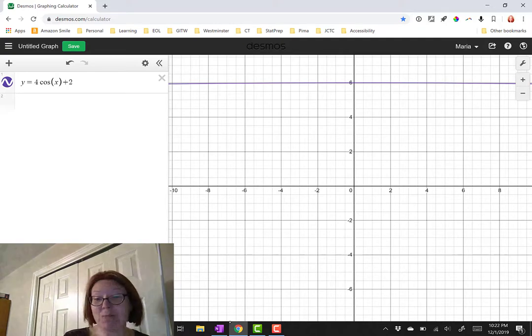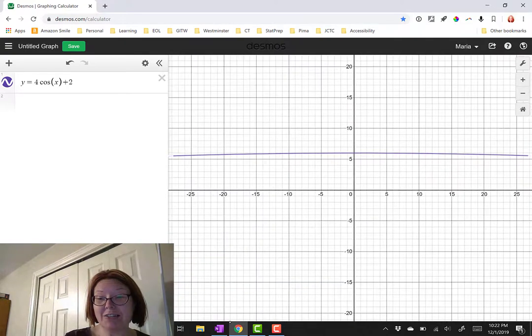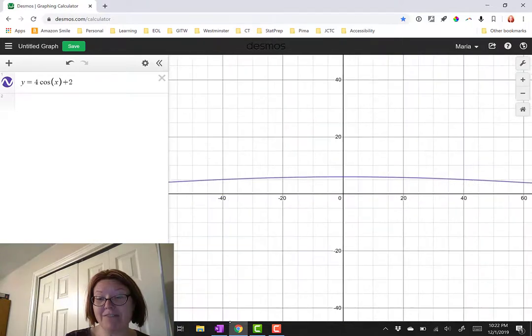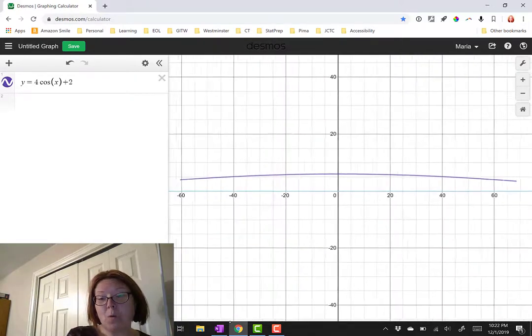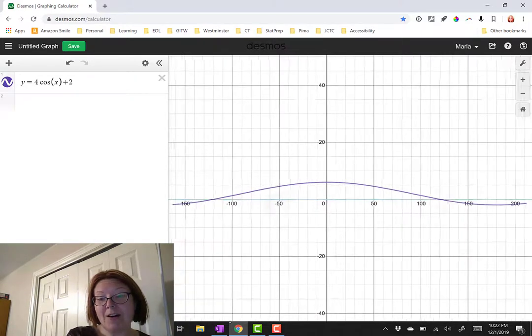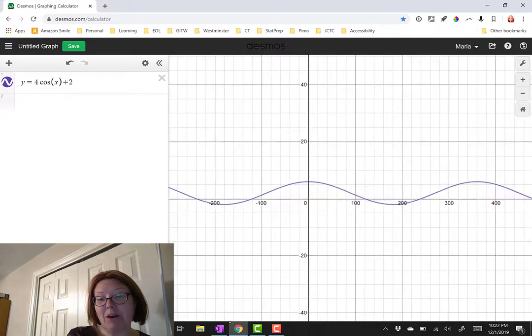If we were to actually zoom out, you'll start to see that there is a curve to this graph, but you have to zoom way, way out to see it become periodic.